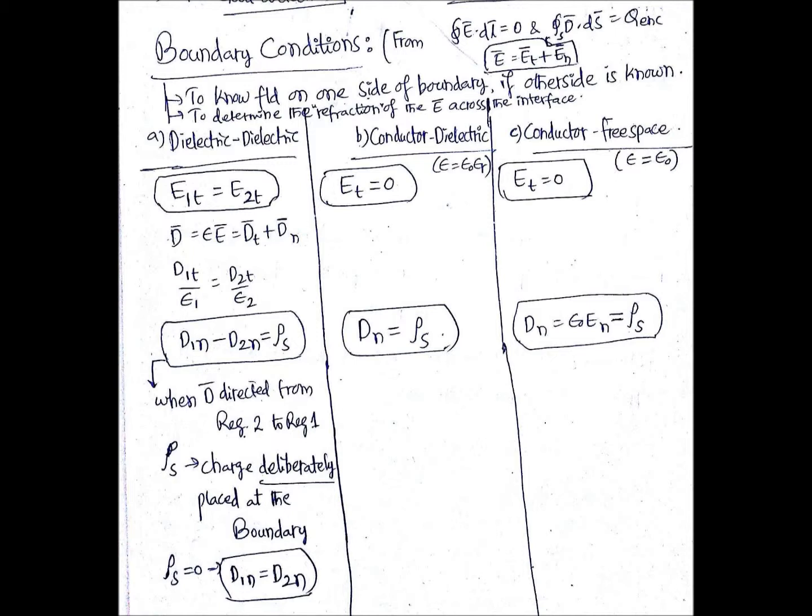This applies when D is directed from region 2 to region 1. If it is directed from region 1 to region 2, you will get a negative sign — that you need to take care of. Here ρs is the charge deliberately placed at the boundary. If ρs equals 0, the condition becomes D1n equals D2n.